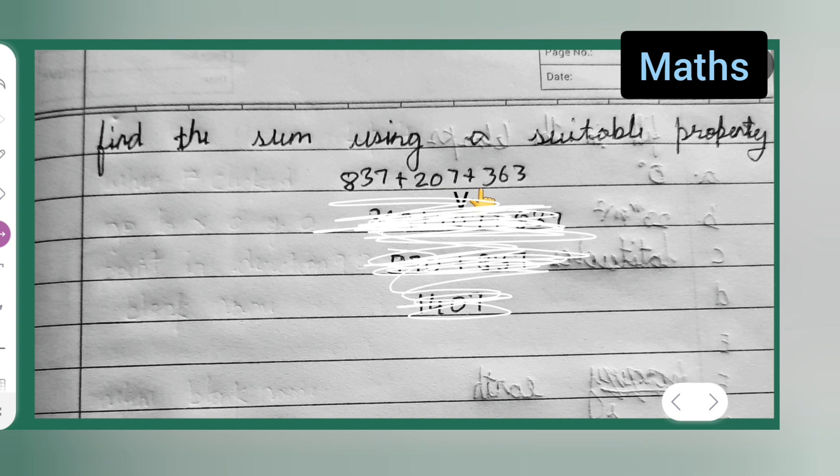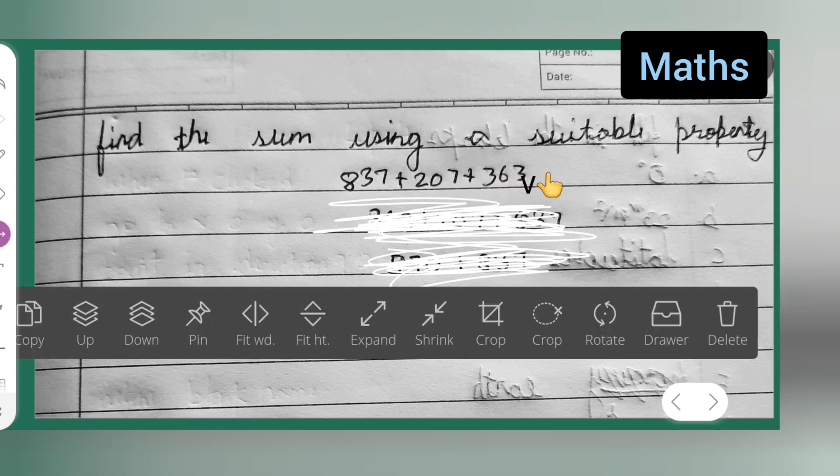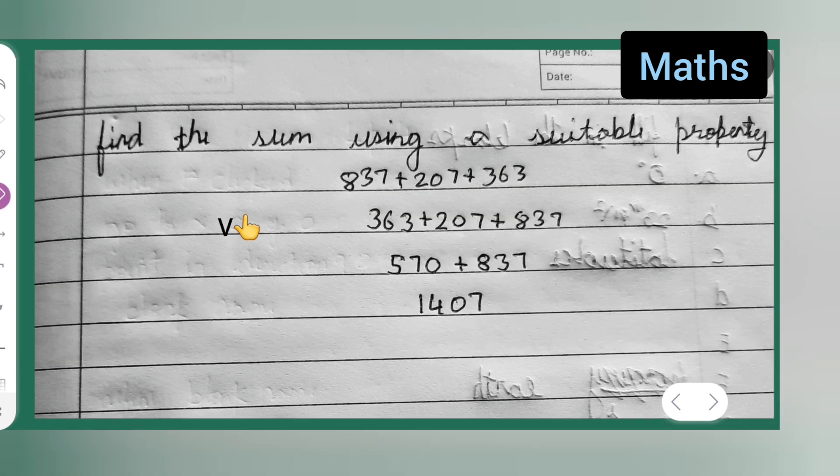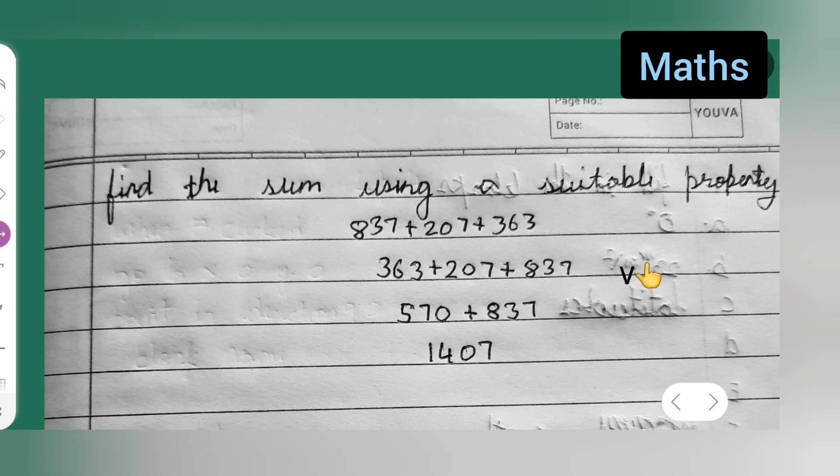837 plus 207 plus 363. First, take these 2, add these 2 numbers first. So, 363 plus 207 plus 837. First, what we are doing, we are adding these 2 numbers.